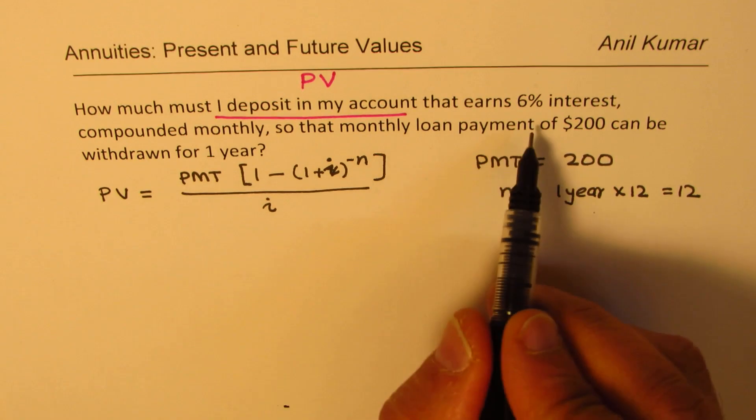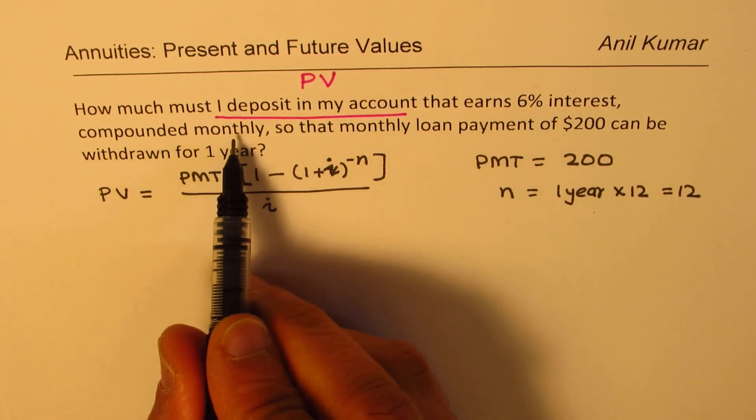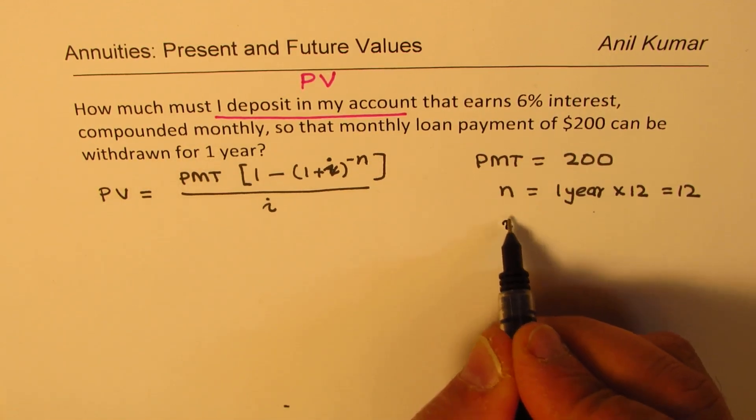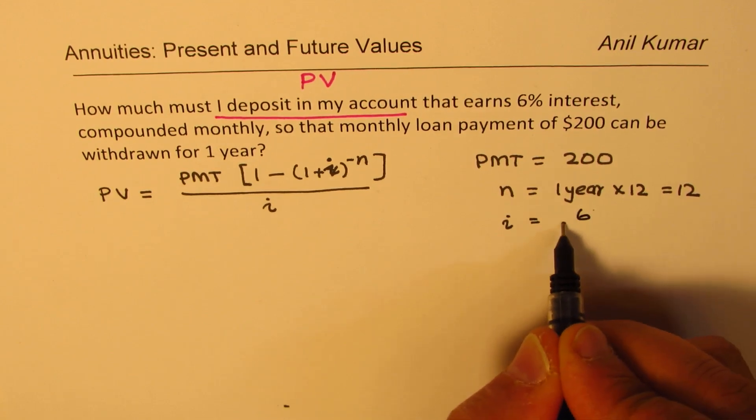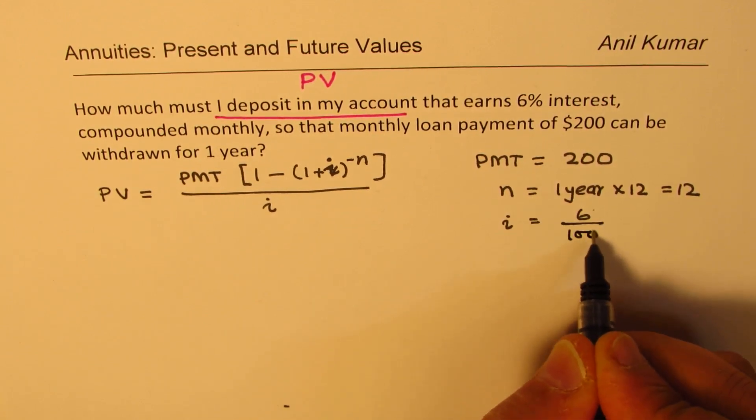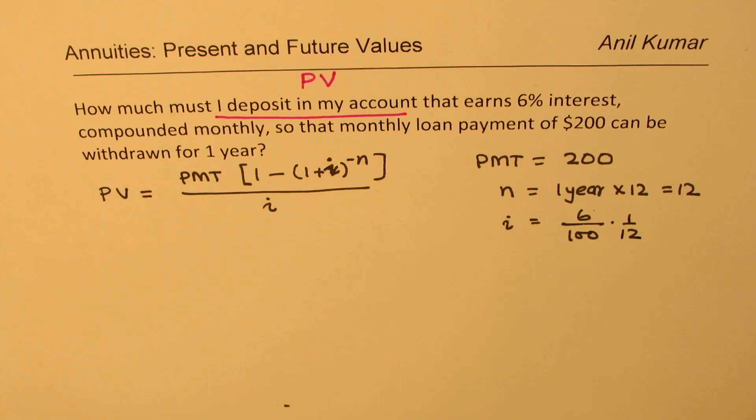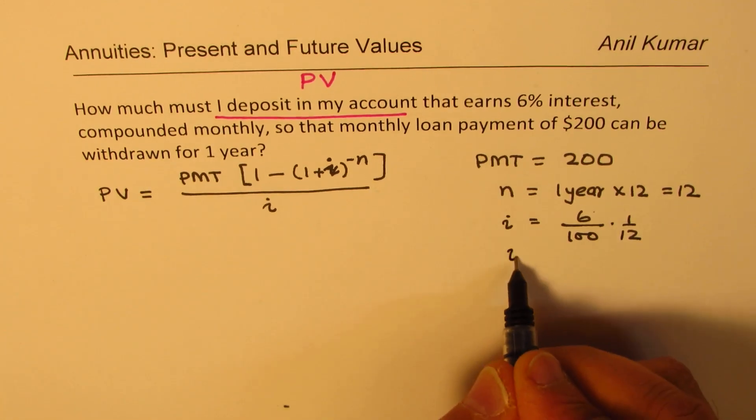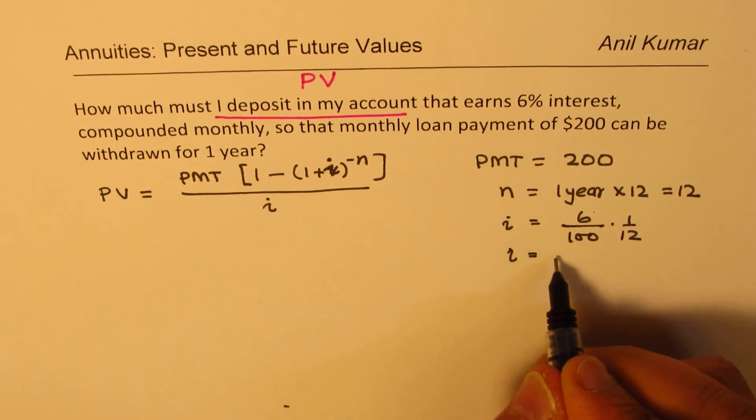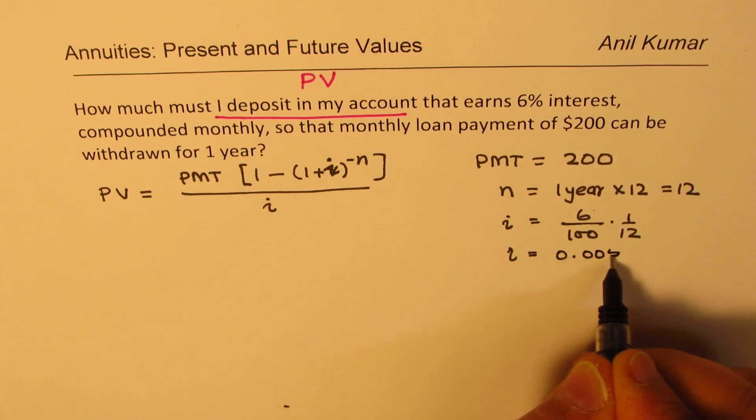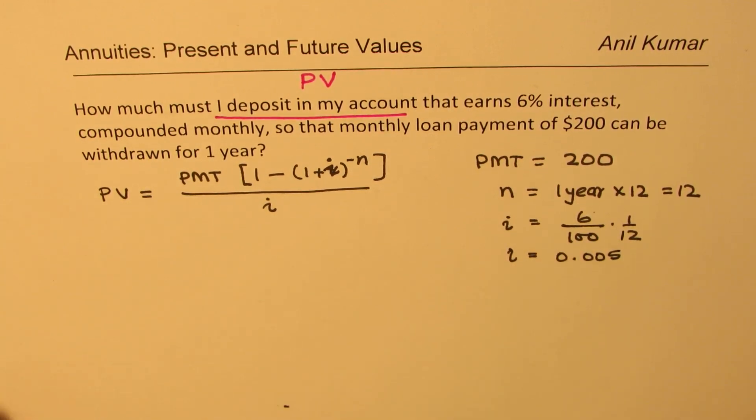Interest is also monthly. 6% compounded monthly. So interest rate will be 6 over 100, that is percent, times 1 over 12. So that becomes your interest rate. You could write interest rate as equal to 0.005. Now, 6 is half of 12. So you get all your figures.